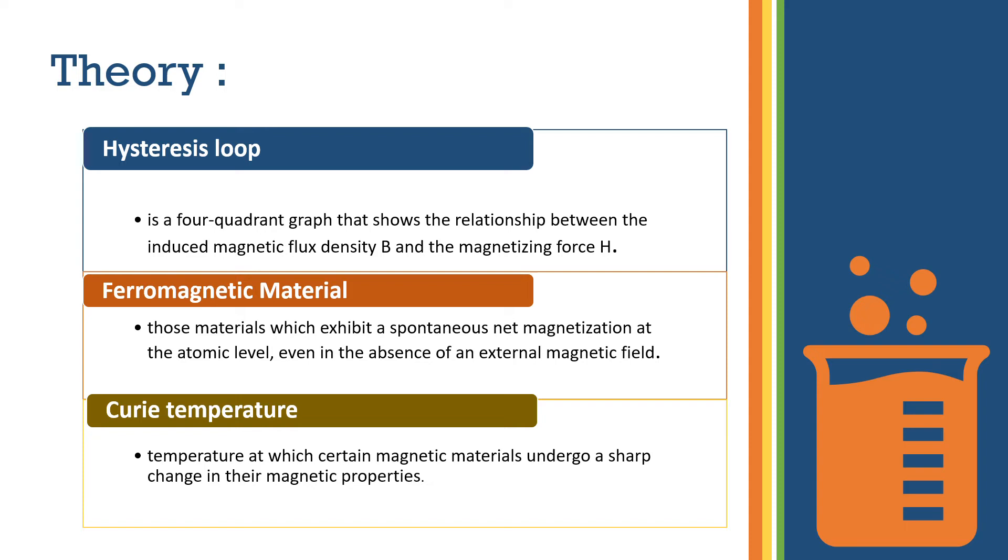The Curie temperature is the temperature at which certain magnetic materials undergo a sharp change in their magnetic properties. At this temperature, we convert ferromagnetic material properties into paramagnetic material properties without changing the atoms.